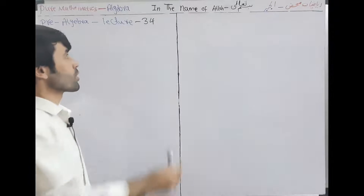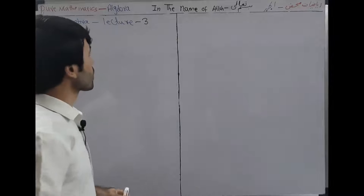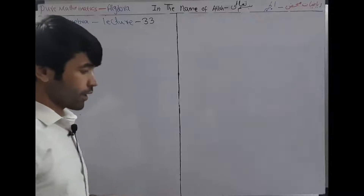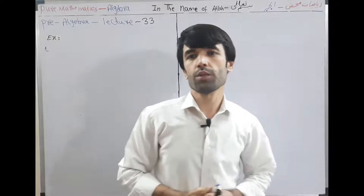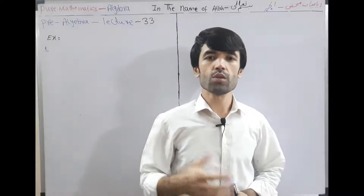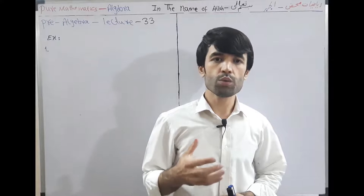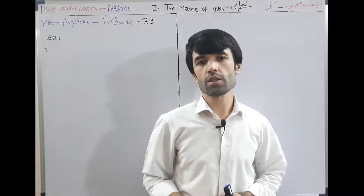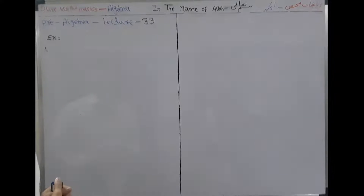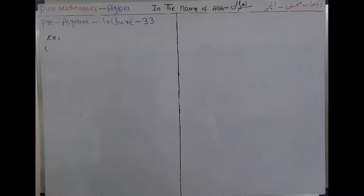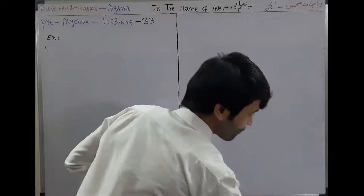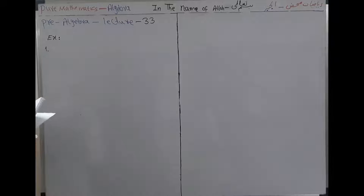Hello friends, welcome to the Pure Mathematics channel. This is a solution of challenging math questions — it is Lecture 33. In Lectures 33, 34, and 35 we will solve some examples of radical expressions because we need to know how to simplify radical questions. In Lecture 33, we have several examples. The first example is: two minus square root of three.